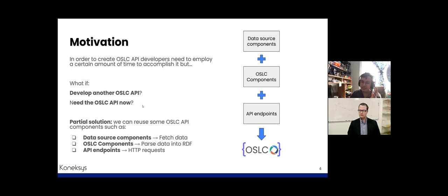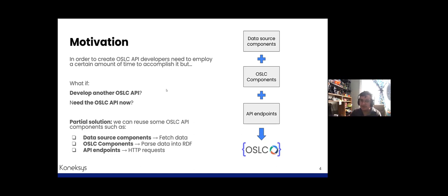In order to speed up its creation, it's possible to see that there are multiple API modules that can be reused, such as data source components employed to fetch REST API data, OSLC models employed to map and expose the REST data into RDF syntax, and models to configure the API endpoints. Developers have faced this problem and different approaches have resulted in multiple solutions.